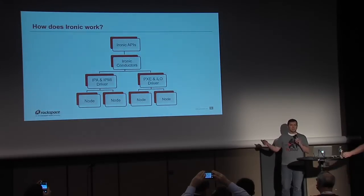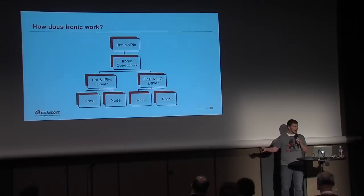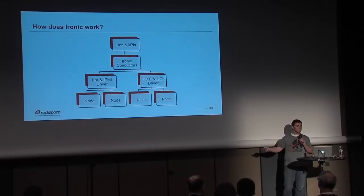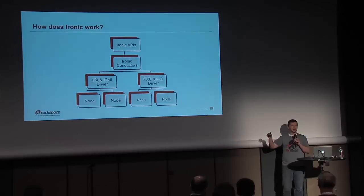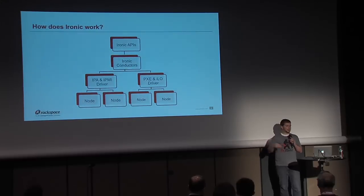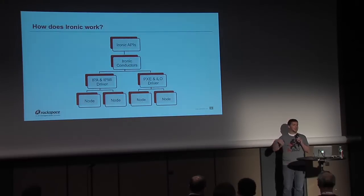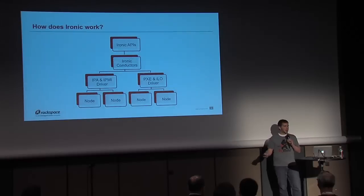If you call Nova boot, the request goes through Nova and down through the Nova driver to the Ironic API. The API looks up the node in the database, figures out which driver is working for it, and finds a conductor that can handle that driver. The conductor shells out to the drivers, and the drivers actually talk to the nodes. In our case, IPA and IPMI is one type of driver — that's what we use in OnMetal — but you could also have a PXE and ILO driver talking to HP hardware.